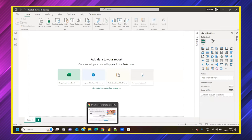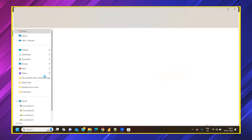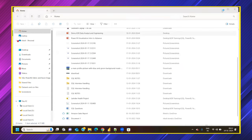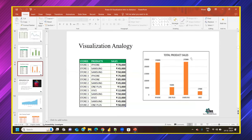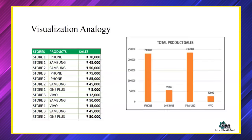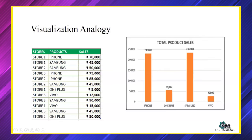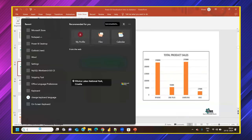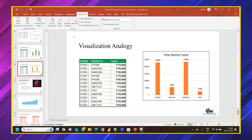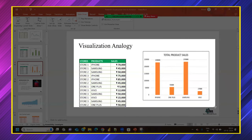Let me revisit the exercise from yesterday. We had a table and I asked whether you could calculate the growth in sales — specifically the percentage difference between iPhone and Samsung. iPhone had 2,30,000 and Samsung had 2,35,000, giving a difference of 5,000. The question is: what is the formula to find the percentage change?